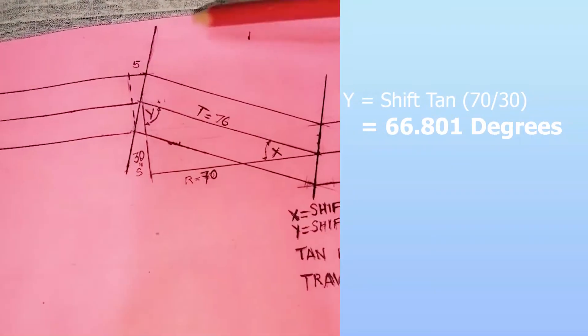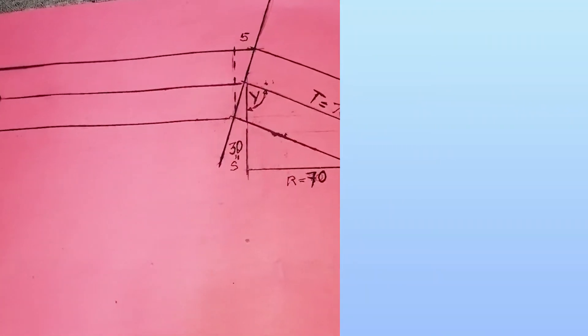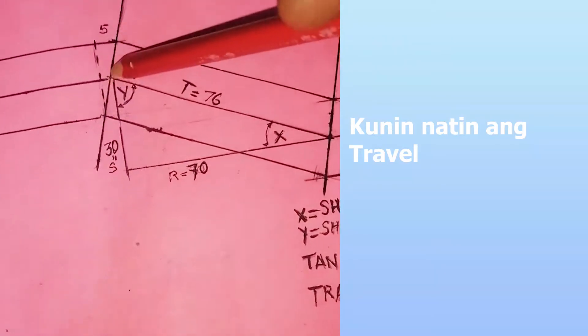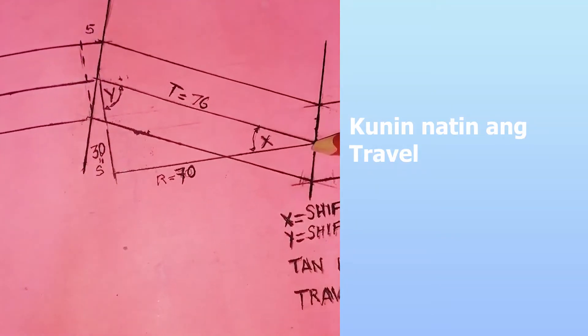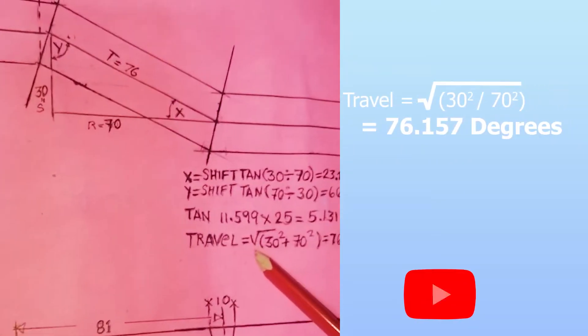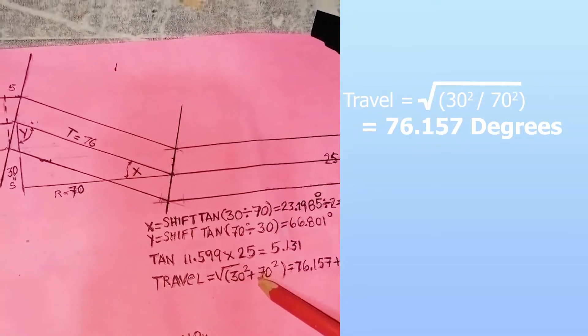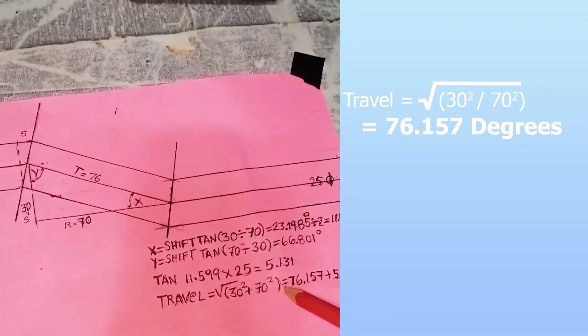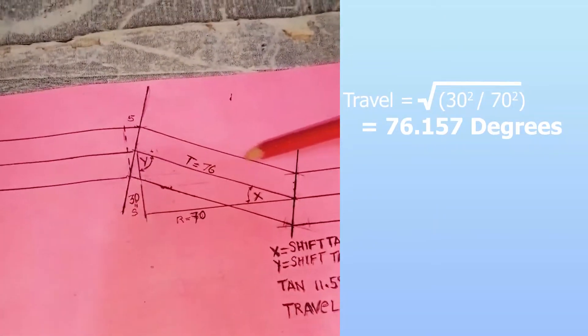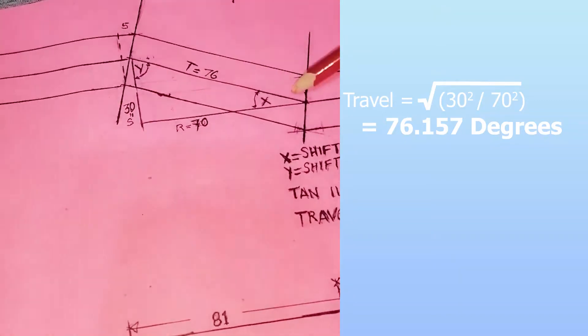Ngayon, kukunin natin yung travel. Ito, magmula rin siya sa sentro hanggang dito, kukunin natin yung travel. Travel equals square root of, close, 30 squared plus 70 squared, close equals 76.157. Magmula rito hanggang dun, 76, yun ang travel.